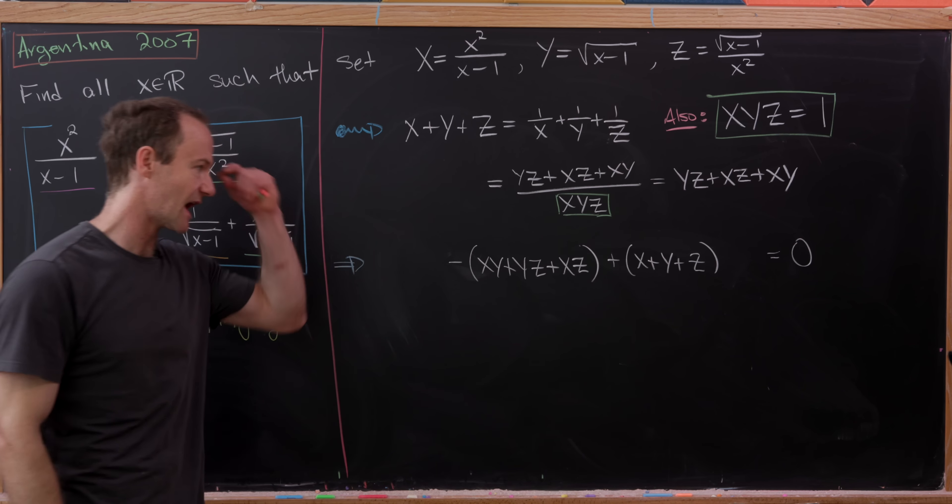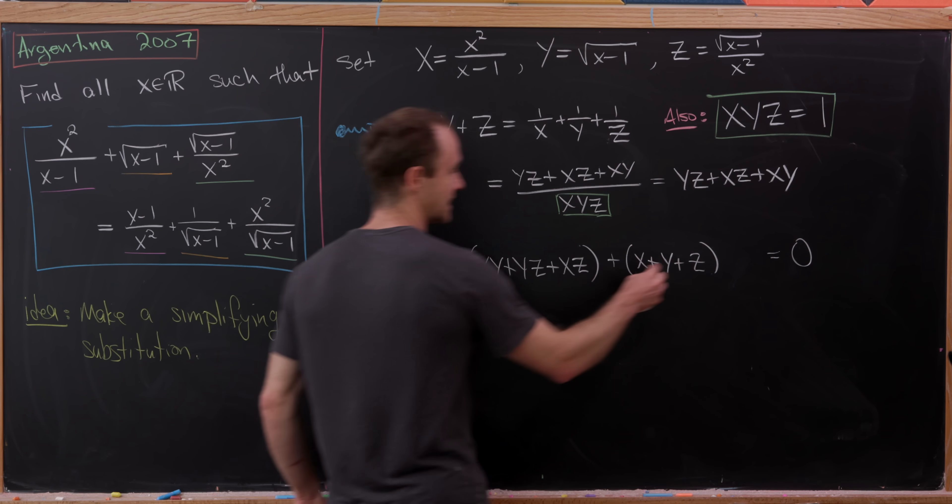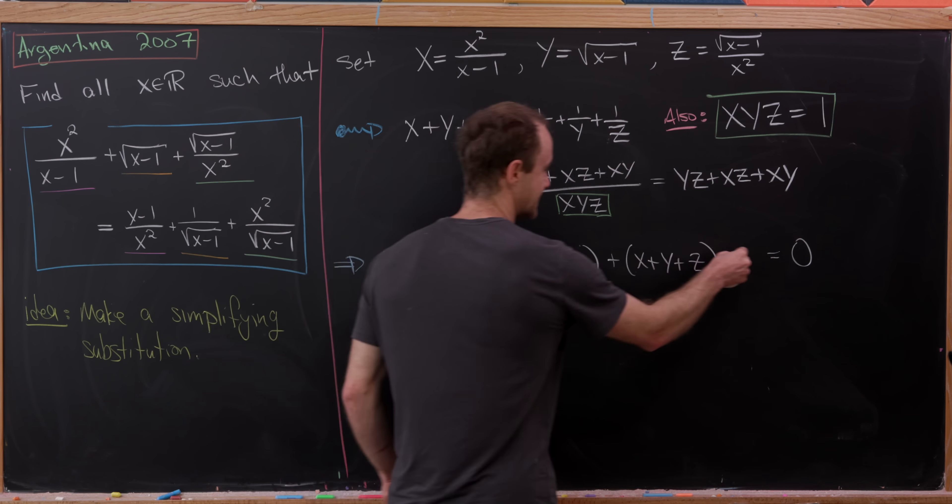Perhaps there are other nice relations among these substituted variables. If we take their product X times Y times Z, we get 1. That's because the square root of (x minus 1) squared in the denominator becomes (x minus 1), which cancels, and the x squareds also cancel. So we also know that X times Y times Z equals 1.